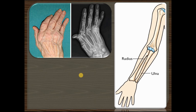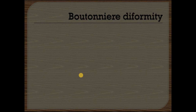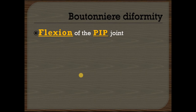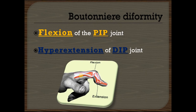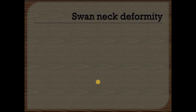In ulnar drift of the hand there is ulnar deviation of the fingers and hand. The next deformity is the boutonniere deformity. In boutonniere deformity there is flexion of the PIP joint — the proximal interphalangeal joint — and hyperextension of the distal interphalangeal joint. In the picture you can see flexion of the proximal interphalangeal joint and hyperextension of the DIP joint.